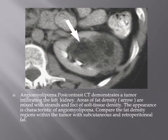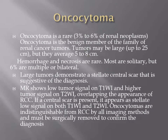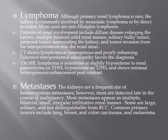A case of angiomyolipoma on post-contrast CT shows tumor infiltrating the left kidney with density equal to the perirenal fat. Oncocytoma is a rare tumor, occurring in 3 to 6% of renal neoplasms, usually in an older age group. It is a large tumor demonstrating a central scar. On MRI it shows low signal intensity on T1 and high signal on T2, making it difficult to differentiate from renal cell carcinoma, so it must be removed or biopsied to confirm the diagnosis.